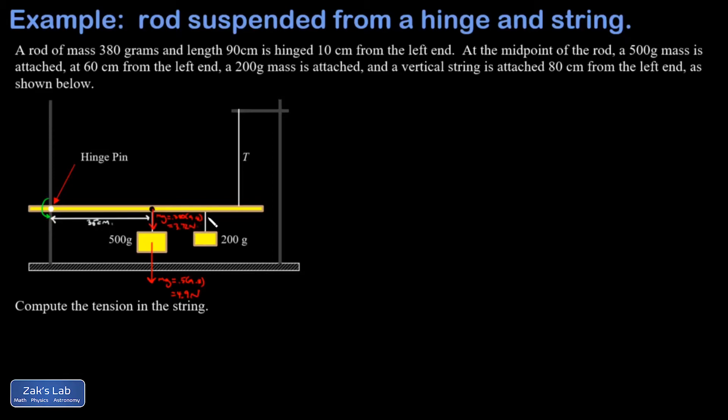All right then I have this 200 gram mass and I'm told that it's located 60 centimeters from the left end of the rod. So the way I've drawn it is a little bit extreme. It doesn't quite look like that but 60 centimeters from the left end of the rod. That makes it 50 centimeters from the hinge. Again because the hinge is 10 centimeters from the end of the rod. And finally I have my vertical string attached 80 centimeters from the left end of the rod which makes it 70 from the hinge. So let's just mark that right here.